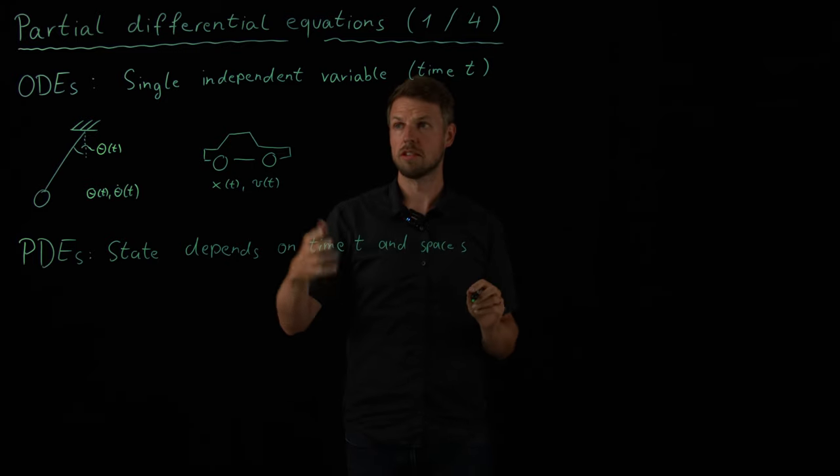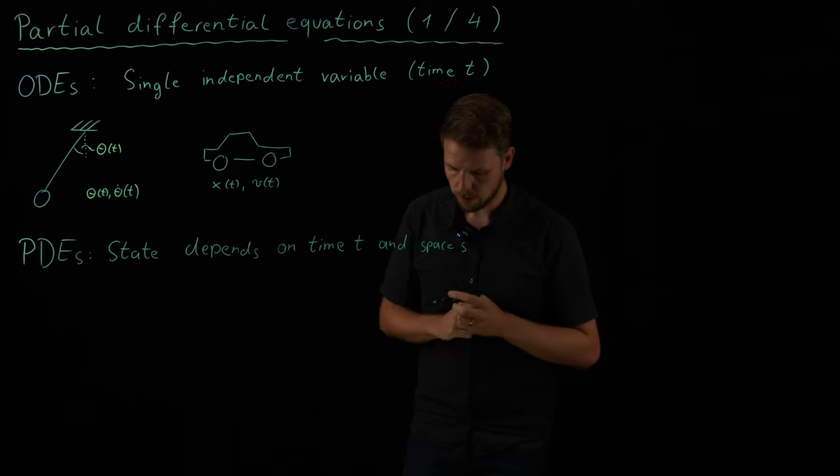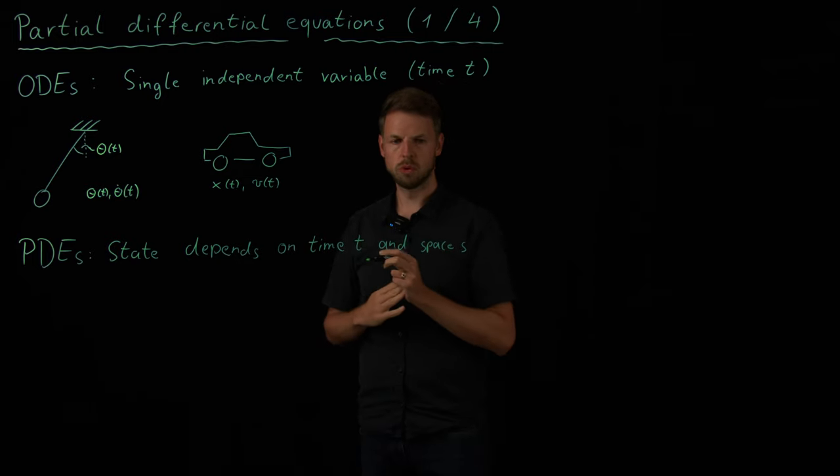But since this is a lecture series about dynamical systems, I'm going to use this as my definition. We don't have one independent variable, time, but we have additional independent variables, space. Again, formally, it's just you have more than one independent variable. But for this purpose, this is what we're going to use.